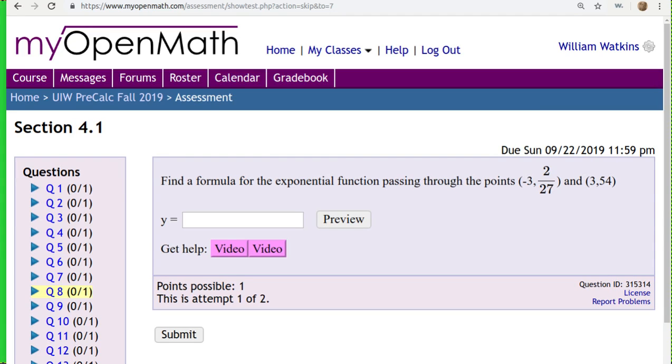In this homework problem we're asked to find an exponential equation, an exponential function that goes through two points. The general form of an exponential function is y equals a times b to the x power, so we're trying to find the a and b that would make this work.